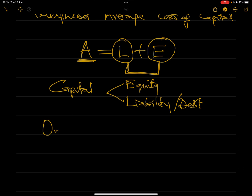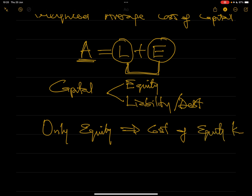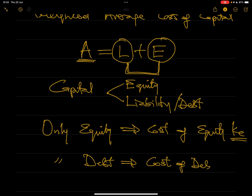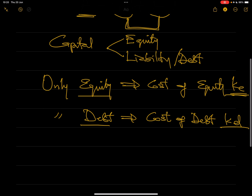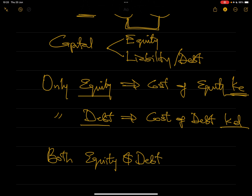When you use only equity to buy an asset, the cost of fund is your cost of equity, denoted as Ke. But if you decide to use only debt to buy the asset, then you have what we call the cost of debt as your cost of fund. Remember, fund is not free of charge — it comes at a cost. In the practical reality of the world, there is always a likelihood that you use both equity and debt.